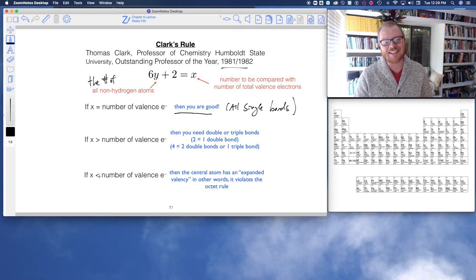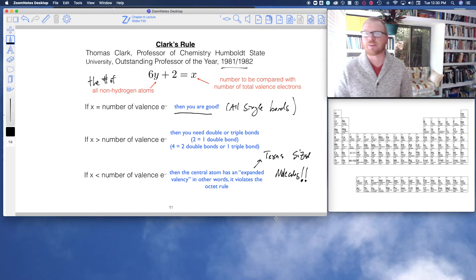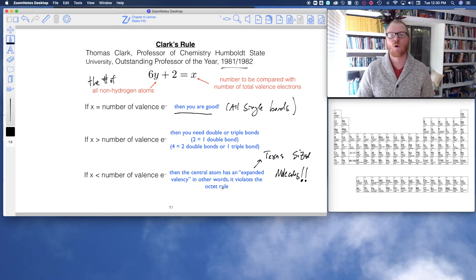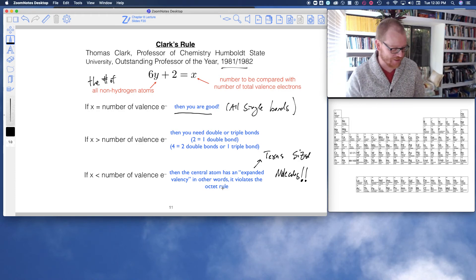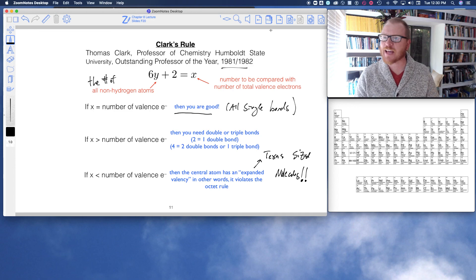Now, if x is less than the number of valence electrons, then the central atom has what we call an expanded valency. And so what that means is it violates the octet rule. And by expanded valency, what I mean is it's Texas-sized. These are Texas-sized molecules. So that's my little joke, because everything is big in Texas. In other words, if x is less than the number of valence electrons, it could have 10 electrons surrounding it or 12 even. So it's a Texas-sized valence electron. Anything from Texas to get that joke? Maybe you can give me some love in the comments.